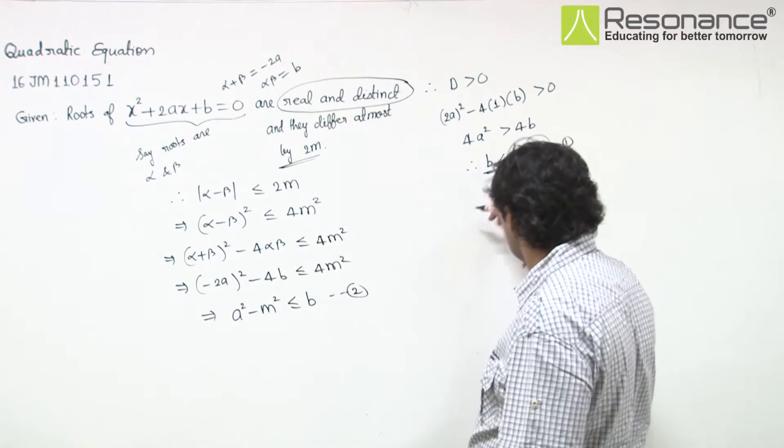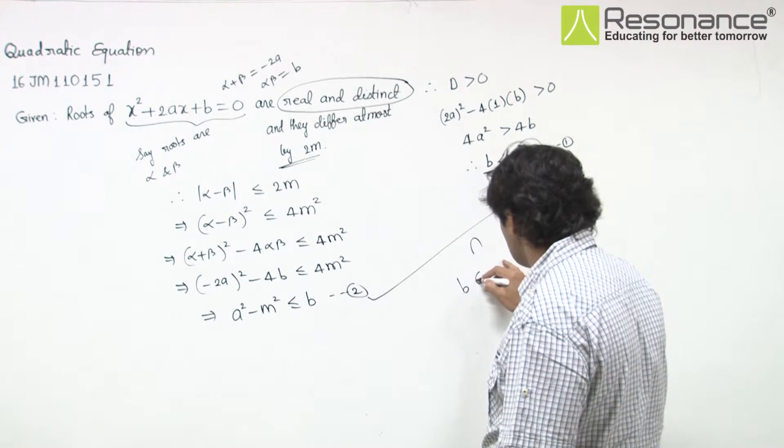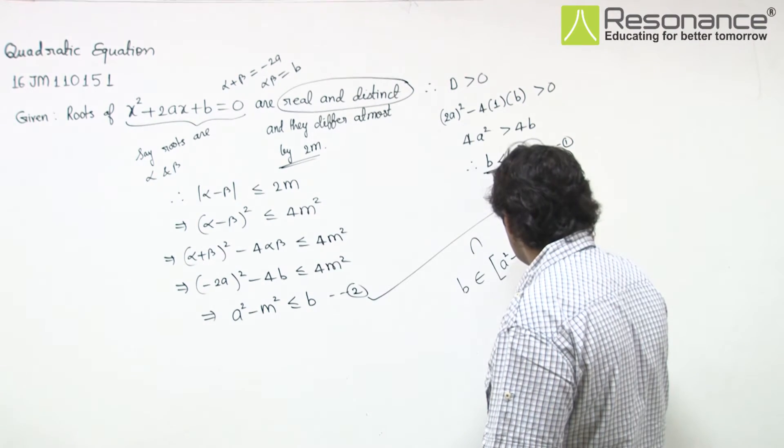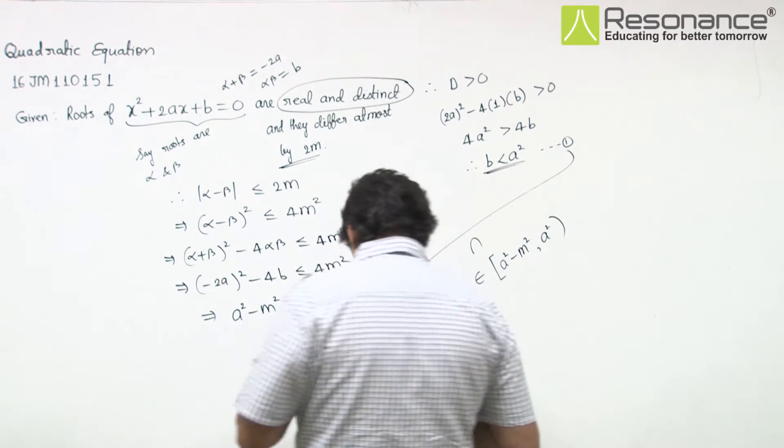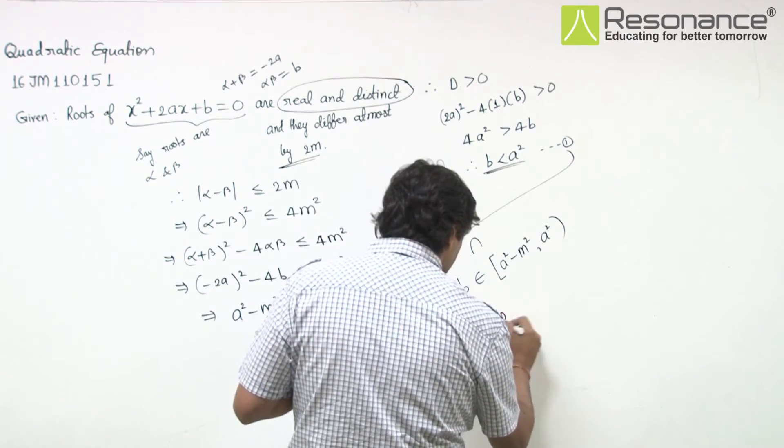Since b < a², taking the intersection, we can say that b belongs to [a² - m², a²]. That means B is the correct option.